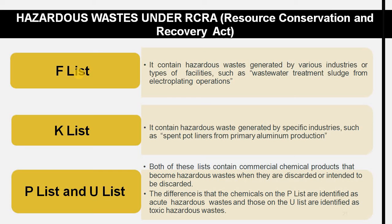Hazardous waste under RCRA (Resource Conservation and Recovery Act) is classified into four different lists: the F list, the K list, and the P and U lists. The F list contains hazardous waste generated by various industries or types of facilities such as water treatment operations.